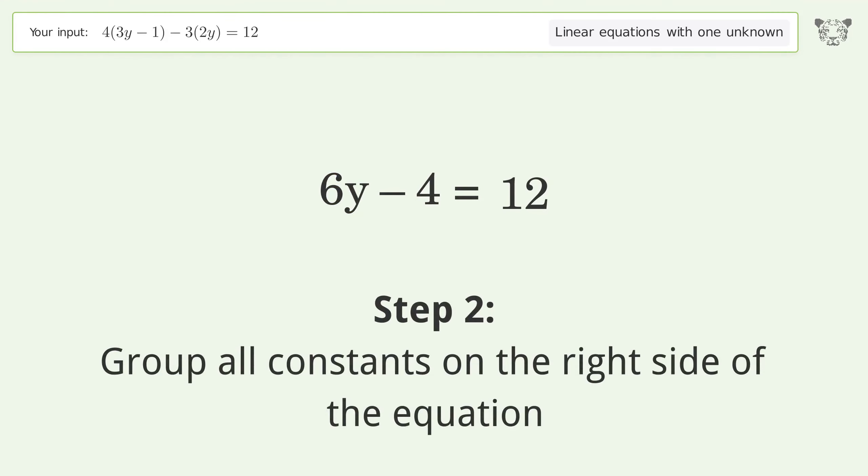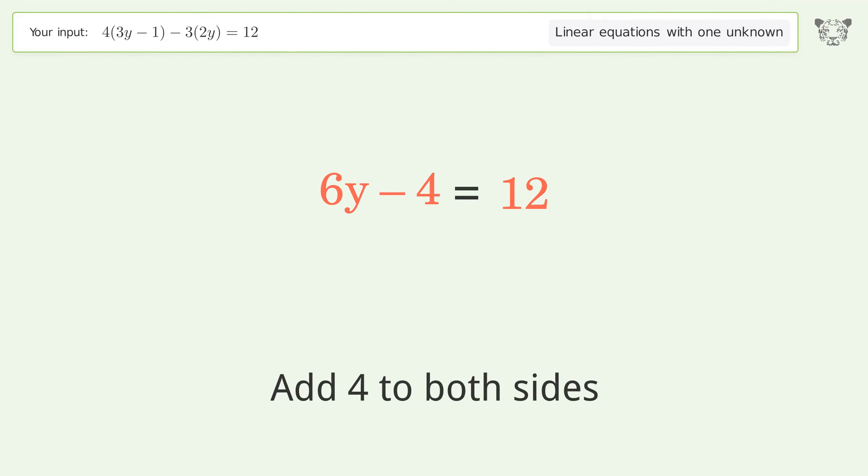Group all constants on the right side of the equation. Add 4 to both sides. Simplify the arithmetic.